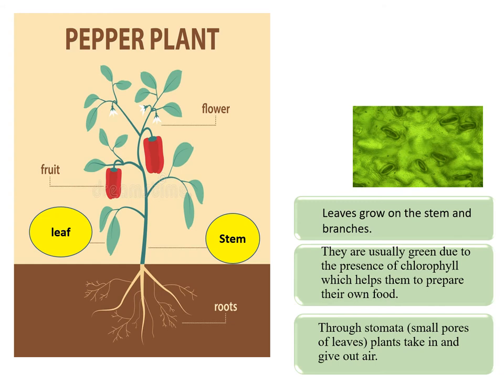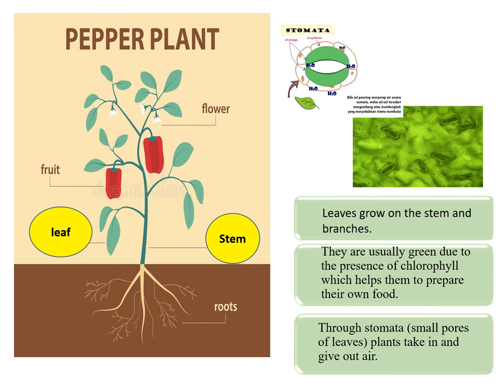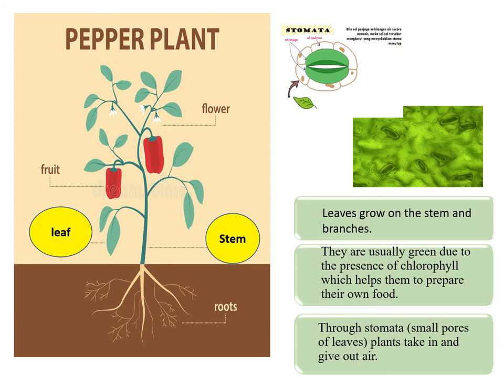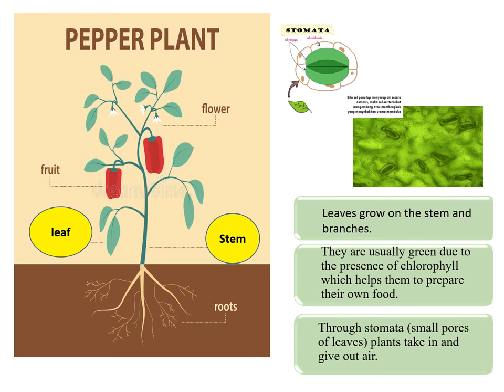Leaves have numerous stomata. Stomata are small pores of leaves through which plants take in and give out air. From stomata, carbon dioxide is taken in by the plant, and after photosynthesis, oxygen and water vapour are given out into the air.